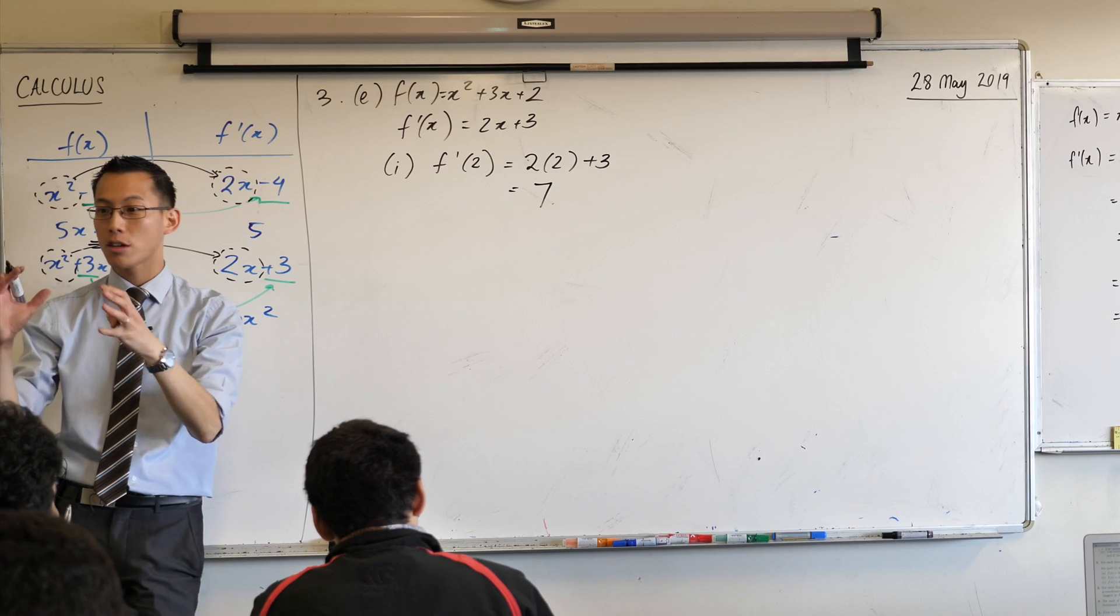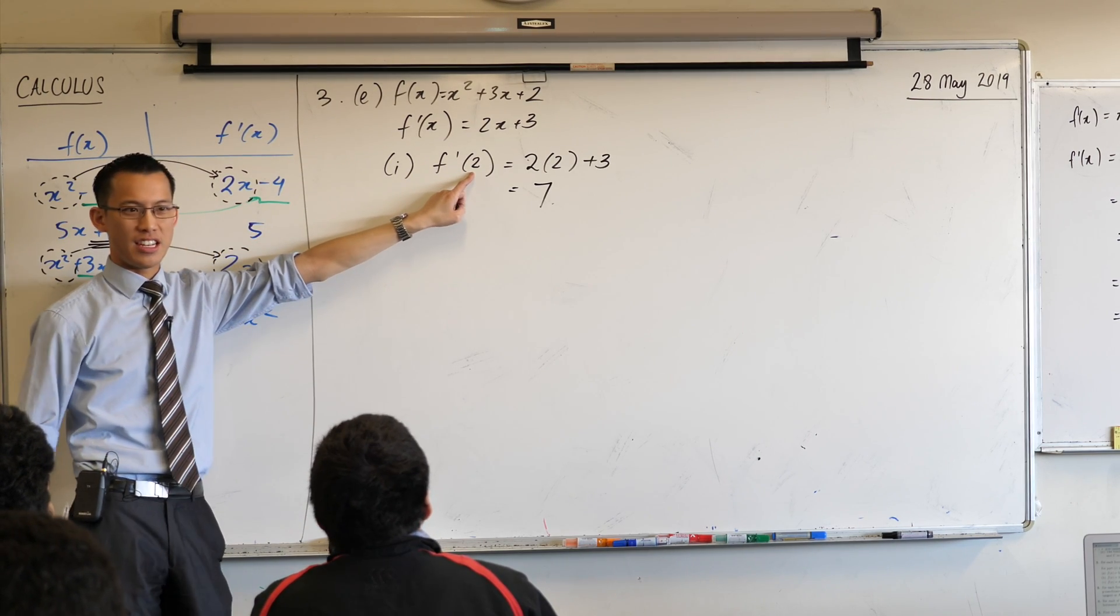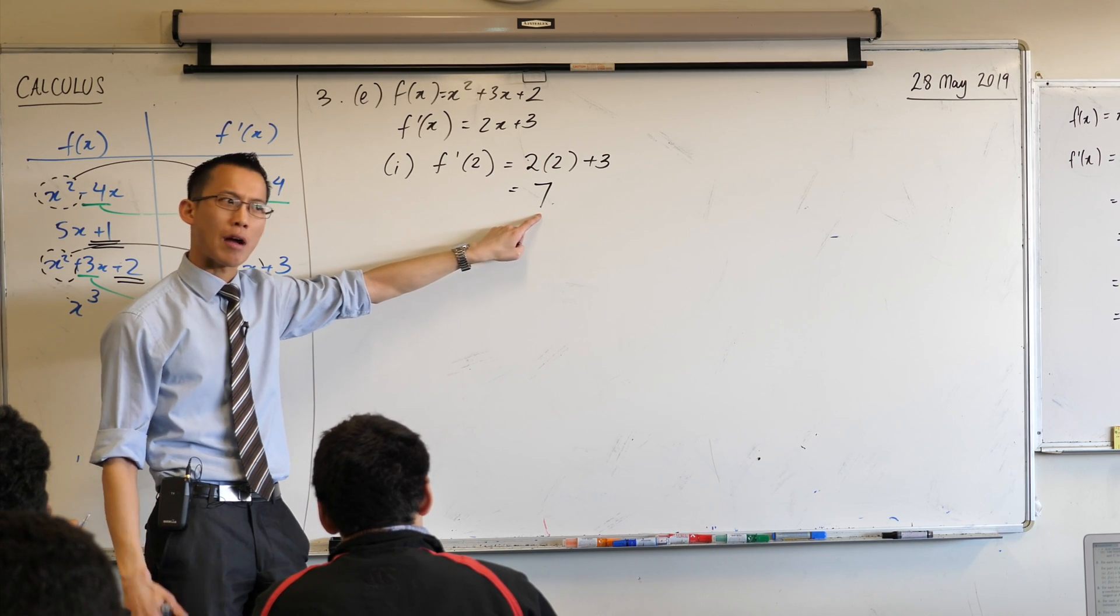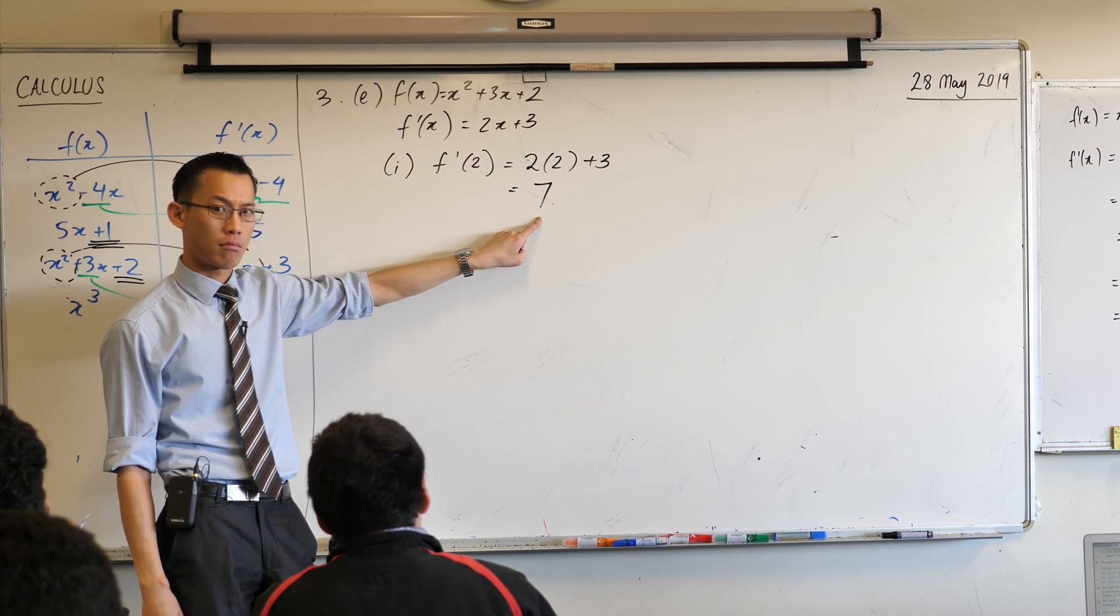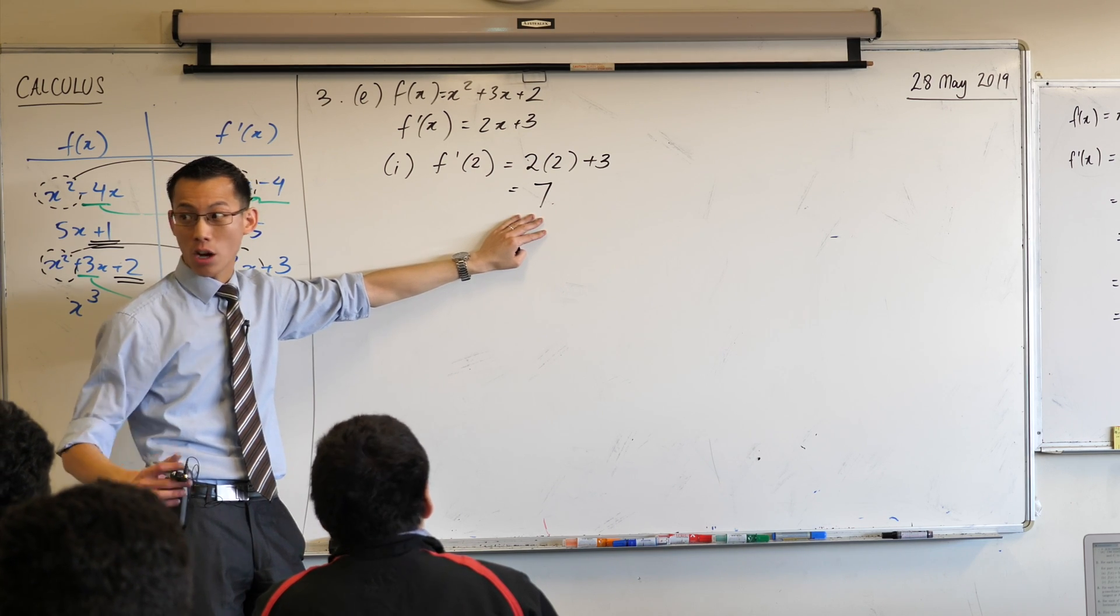Now what does this mean? This f dash x, it tells me the gradient. At any point you like, right? The point they seem to be interested in is x equals 2. At that point, the gradient is 7. How would you describe that visually to someone? Gradient of 7. That's very steep. Is it going up or going down? Up.